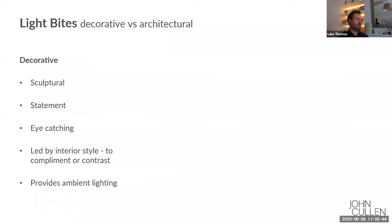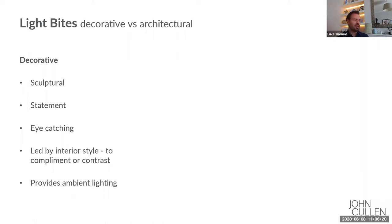Decorative lighting tends to be your pendants, table lamps, chandeliers, wall lights — that sort of thing. They're usually sculptural pieces. They're there to make an impact and a statement, and they're probably one of the first things you're going to notice when you enter a space. They should really be in keeping with the interior styling of the property, and they tend to be quite heavily influenced by the interior designer or even the client, because they can have a real personal meaning to the project.